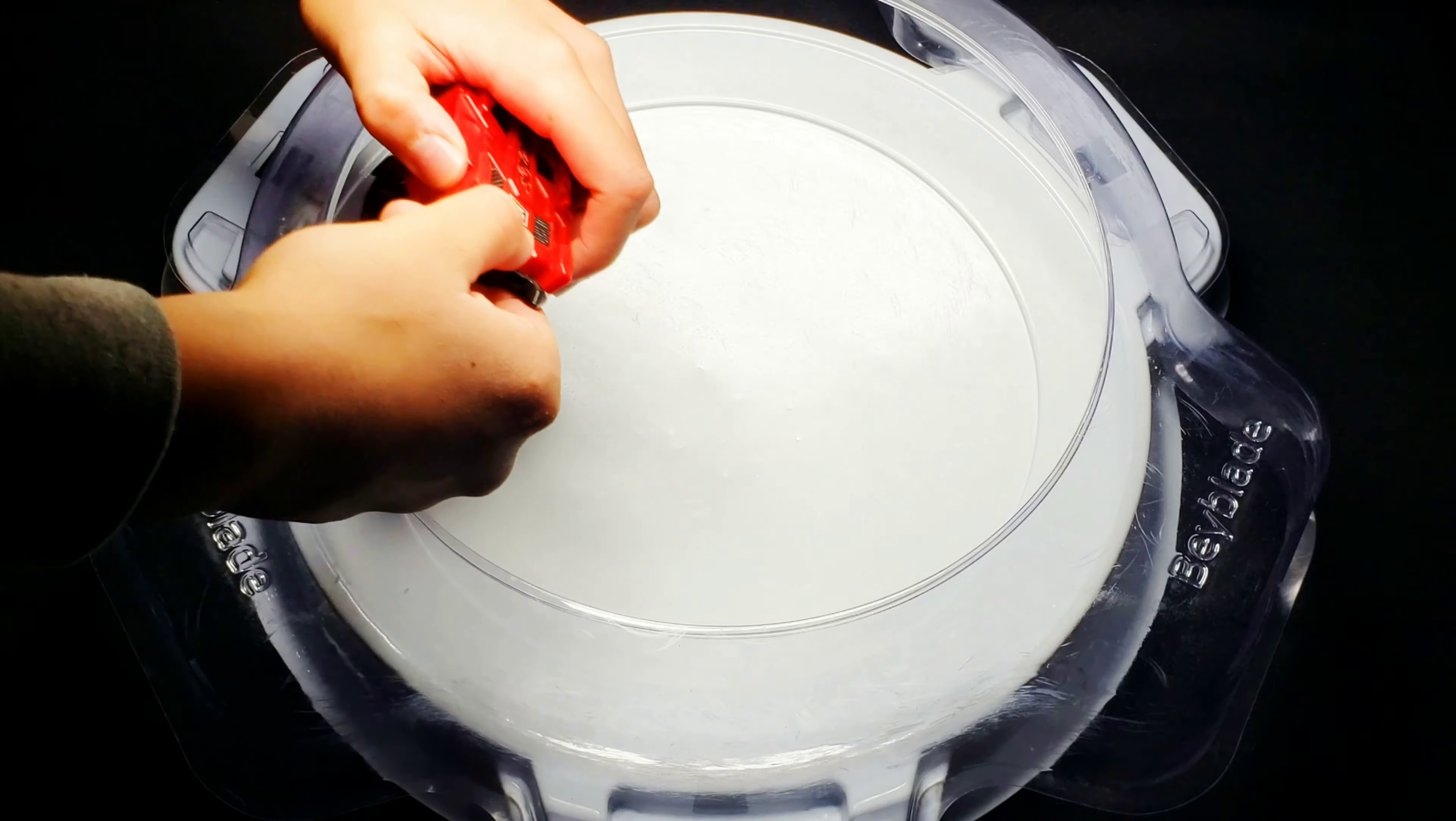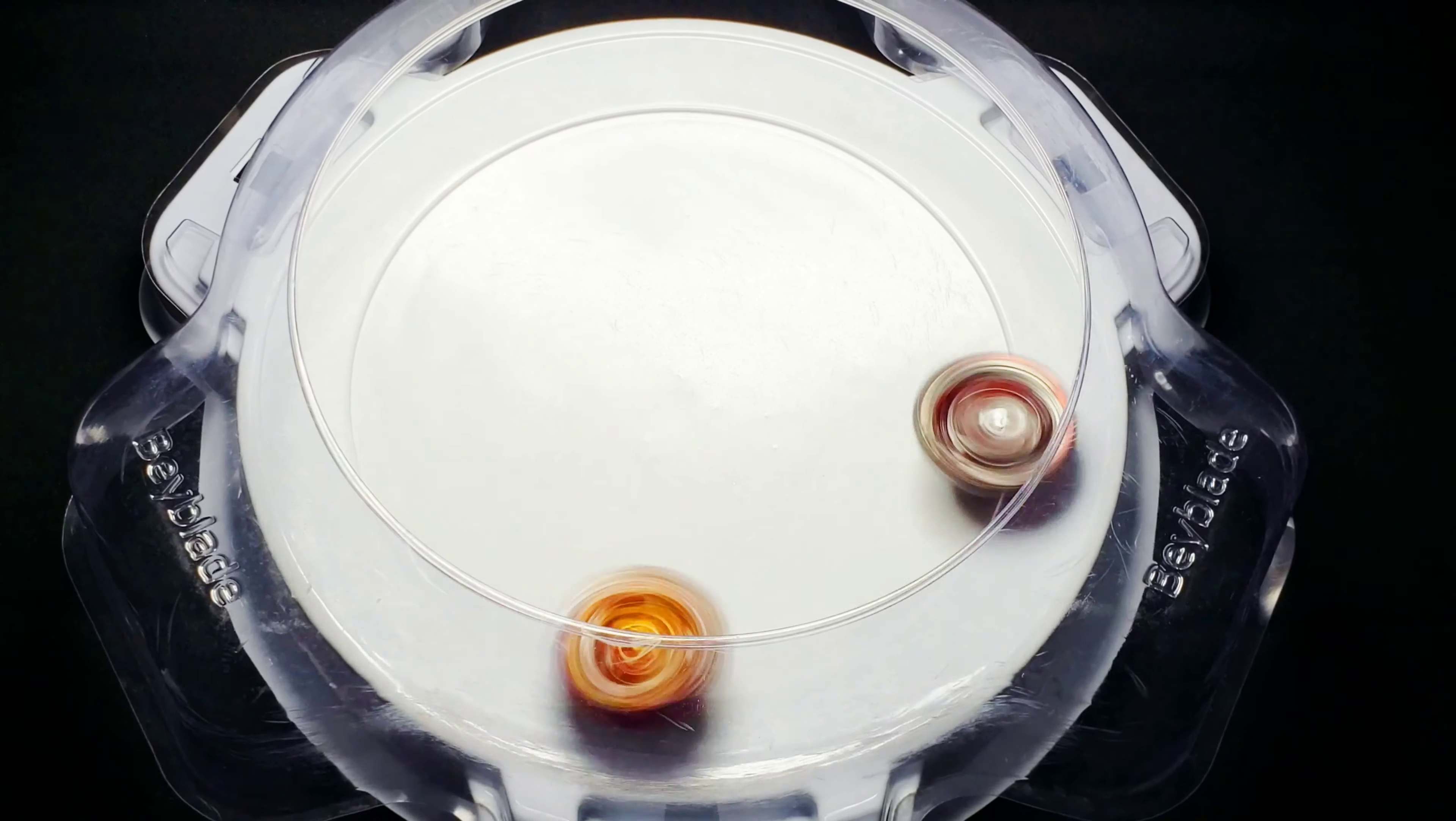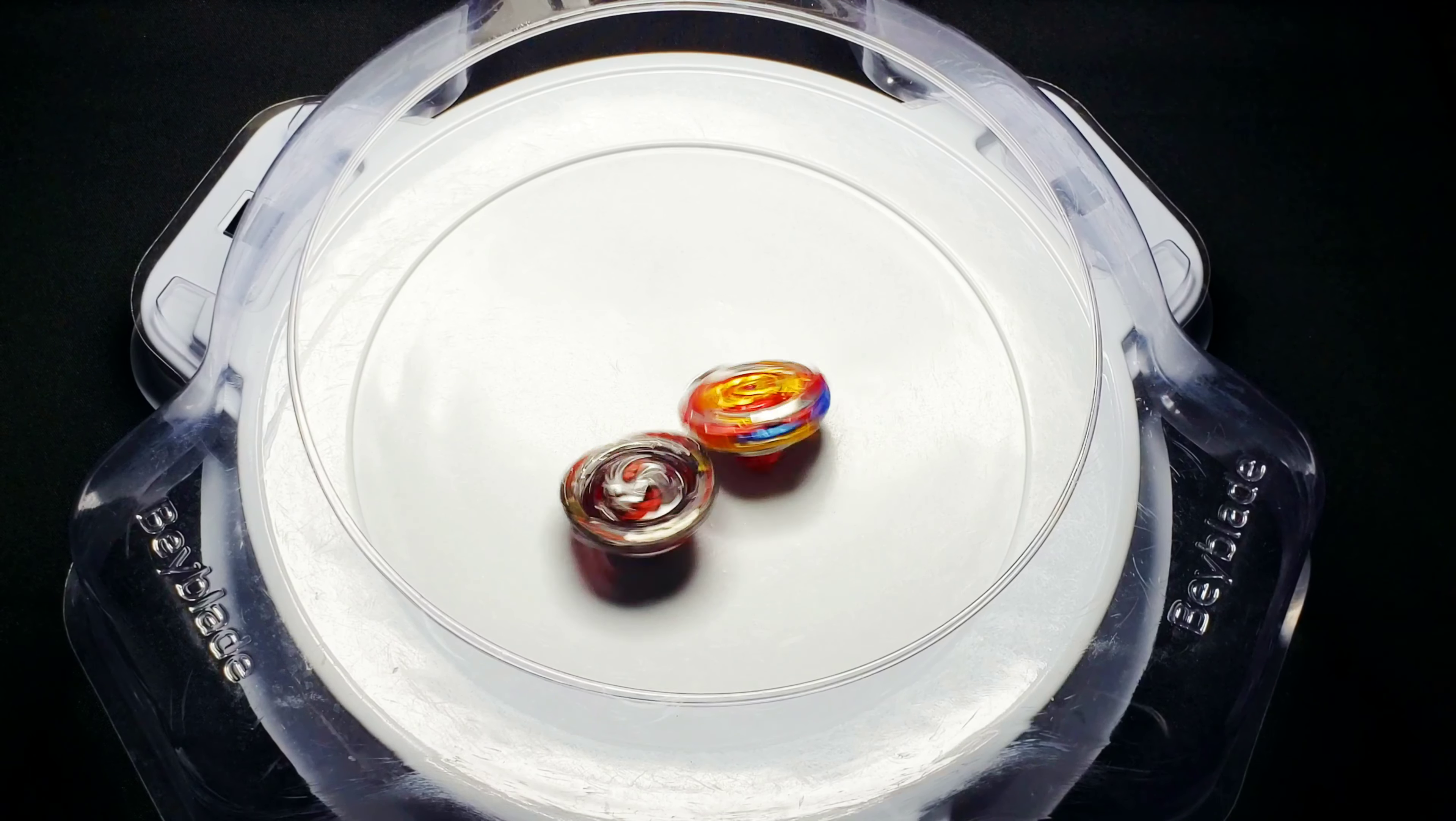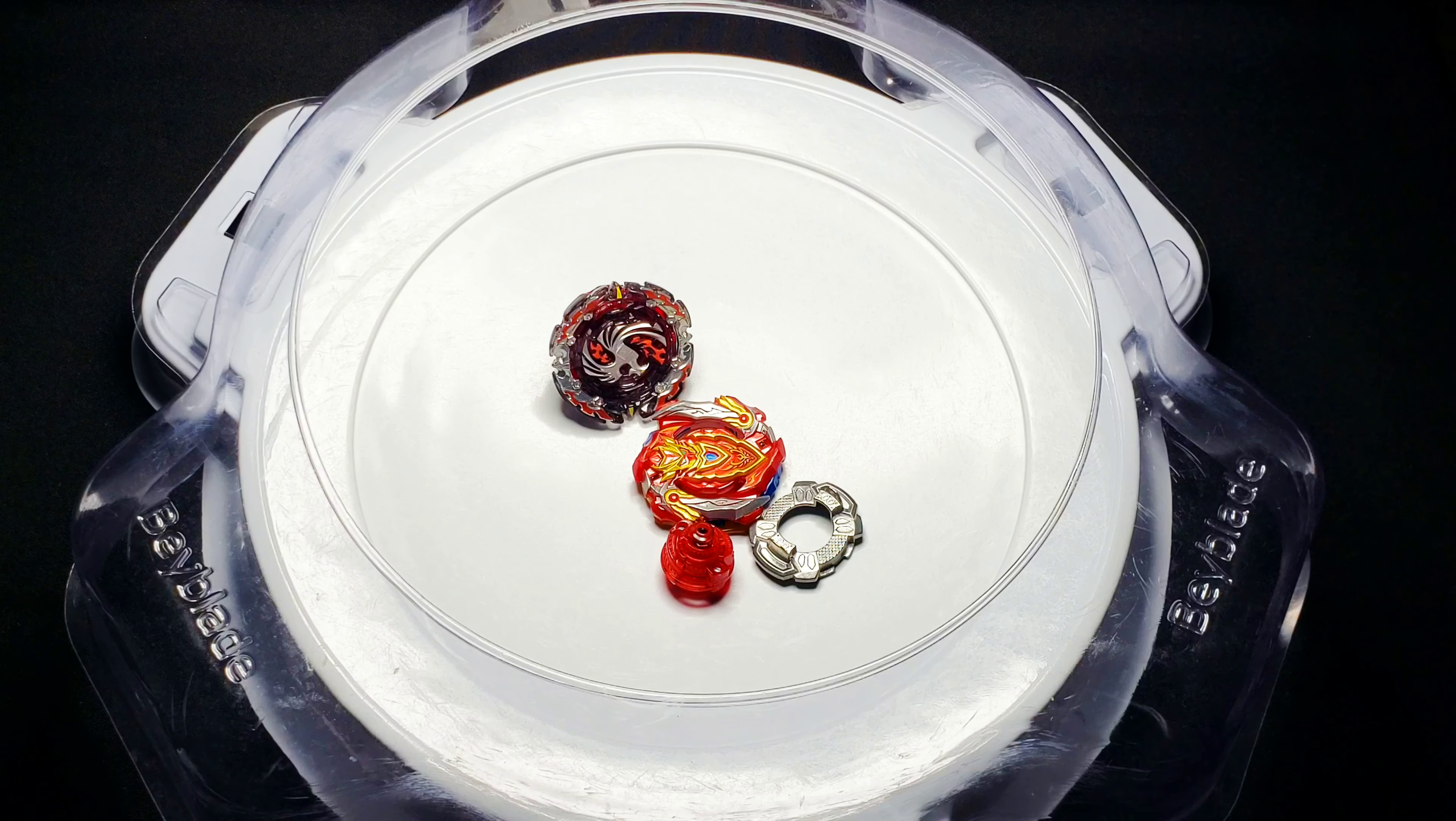All right. There we go, Chozee Achilles circling around on Dead Phoenix, my bad. Ooh, very close here. But Dead Phoenix actually getting the burst on Chozee Achilles, making the score nine to two now. Next round.